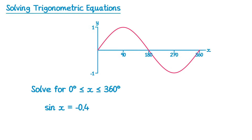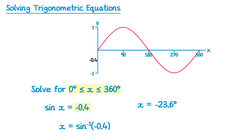Now this is where things get a little bit tricky — when you're solving an equation with sine equal to a negative value, something different happens. So let's do inverse sine of negative 0.4. If you type this into your calculator, it will tell you negative 23.6 degrees. We need solutions from 0 to 360 degrees, so this solution isn't okay. Let's draw the usual line on our graph at negative 0.4 — and we can see the two solutions that we want.